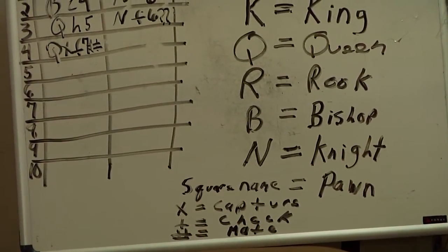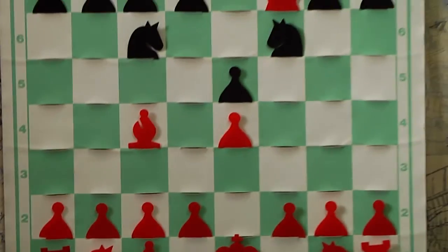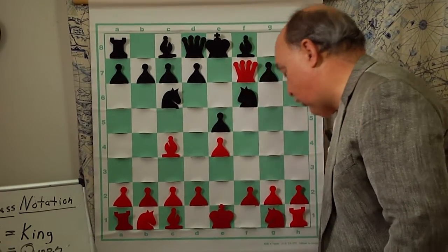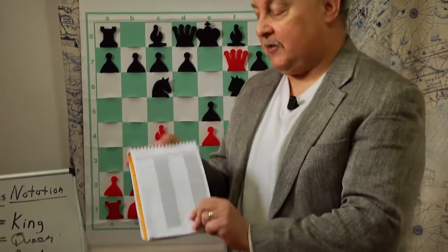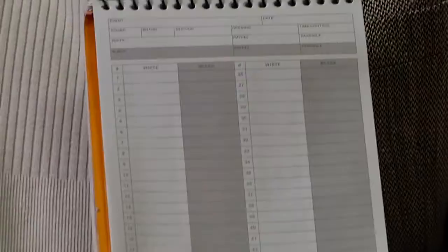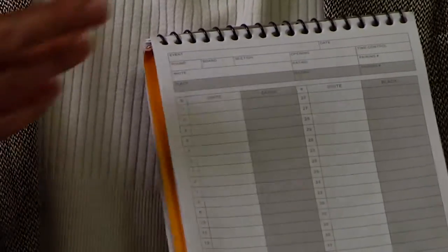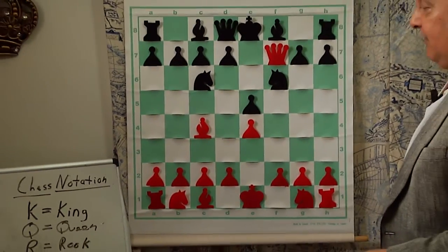Once you start writing down your moves, you will find that you're able to go over your games quite successfully. Now, a typical score sheet, I'm going to hold one up for you now here, looks much more like this, where there's a lot more room at the top for additional information, name of the tournament, the date, the ratings of the players, all sorts of other things which we can talk about later. But as for now, I simply want you to focus on the names of the moves.